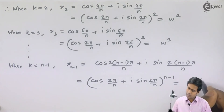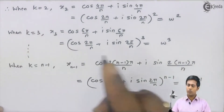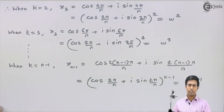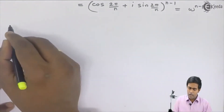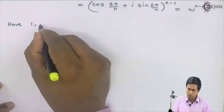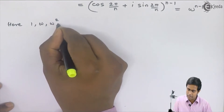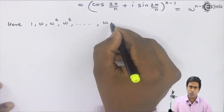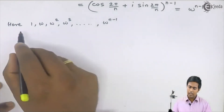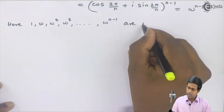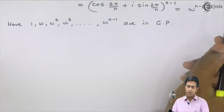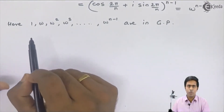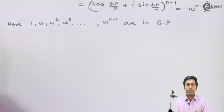We observe that when k = 2 we get ω², k = 3 gives ω³, and k = n − 1 gives ω^{n−1}. So all the roots are: 1, ω, ω², ω³, ..., ω^{n−1}. These roots are in geometric progression because the ratio between any two consecutive terms is constant and equal to ω. Hence, we have proved that the nth roots of unity are in GP.